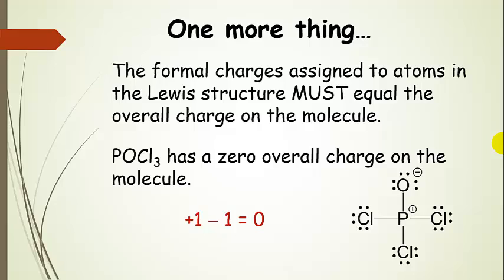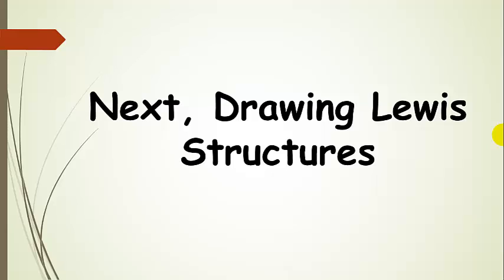After assigning formal charges, you need to check that they add up to the overall charge on the molecule. Phosphoryl chloride is neutral, so the formal charges must add to zero — not every atom needs to be zero, they just need to sum to zero. Oxygen is minus one and phosphorus is plus one, and those add to zero, so we're good. If a molecule had an overall charge of minus one, the formal charges should add to minus one. Next, we're going to draw Lewis structures.